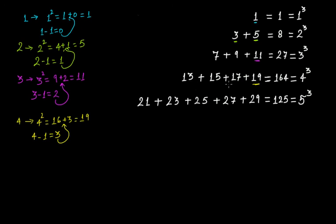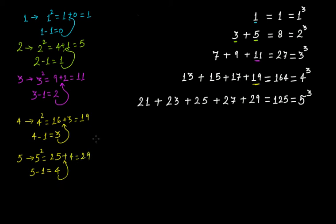For five cubed: five squared is 25. Five minus one is four. Add four to 25 — you get 29. So 29 is the largest odd number. Counting back five consecutive odd numbers: 29, 27, 25, 23, 21. That is the pattern.